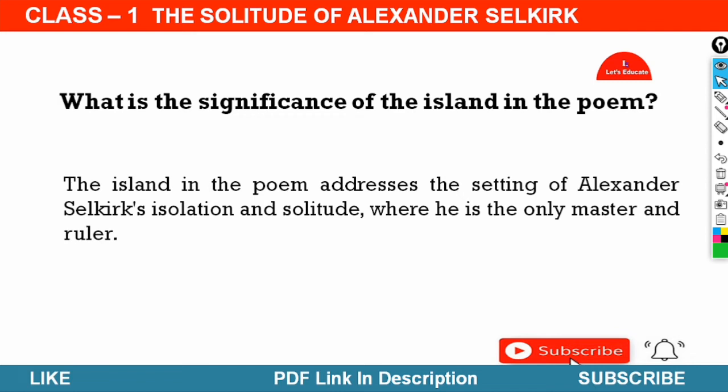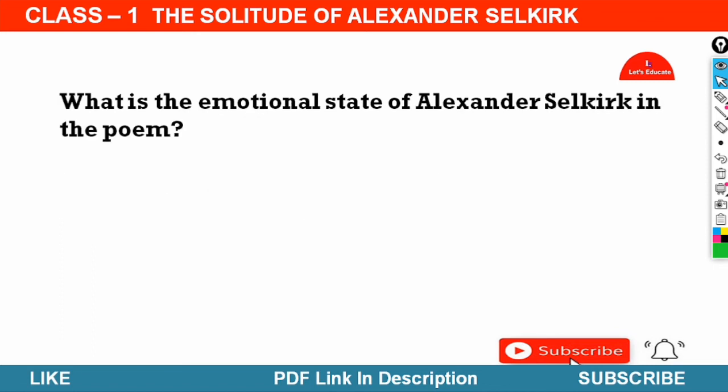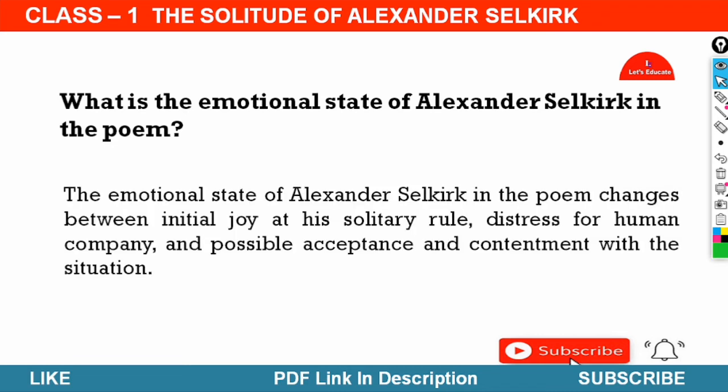Next question. What is the emotional state of Alexander Selkirk in the poem? Answer: The emotional state of Alexander Selkirk in the poem changes between initial joy at his solitary role, distress for human company, and possible acceptance and contentment with the situation.